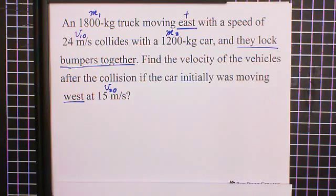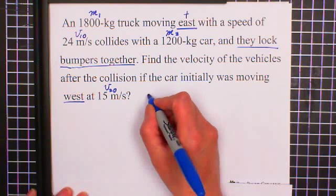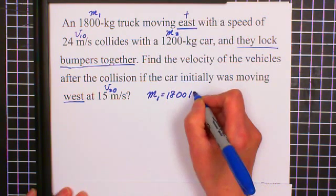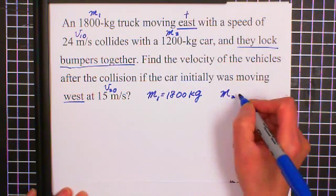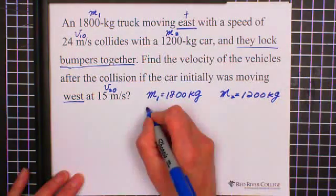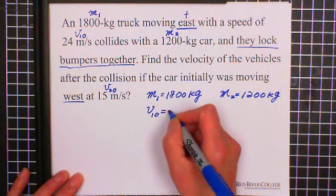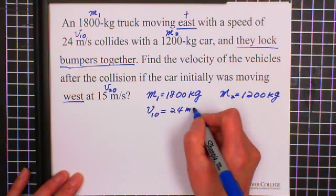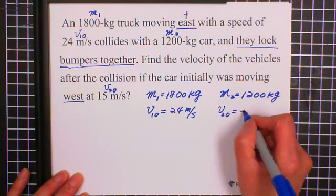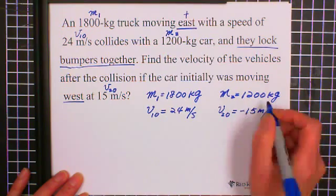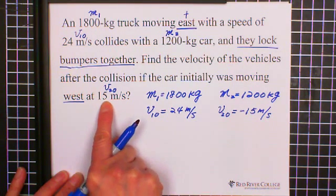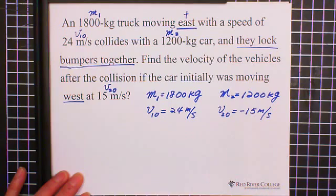So we write down the information. M1 equals 1800 kilogram, M2 equals 1200 kilogram. And V1 initial equals 24 meter per second which is positive. And V2 initial equals negative 15 meter per second. Because one is going to east, we set it positive. The other one moving west, we put negative.